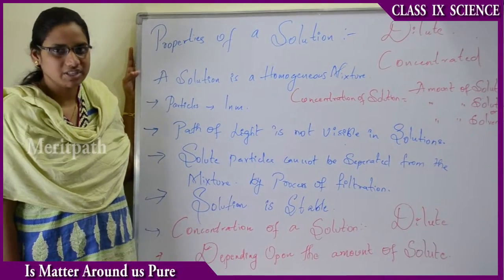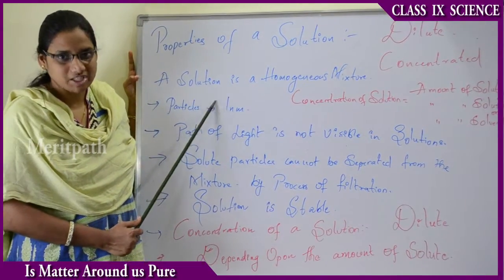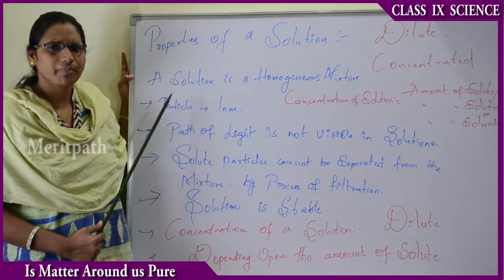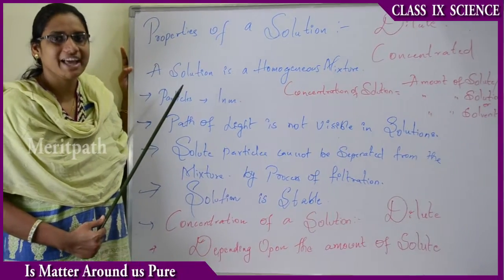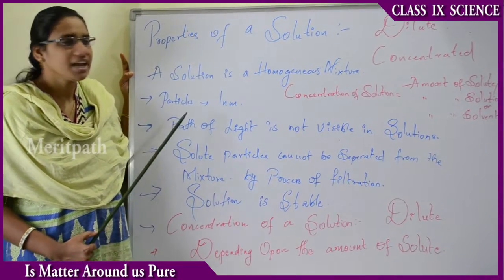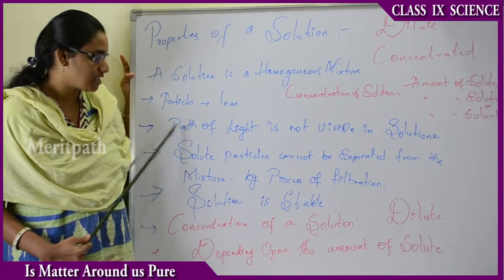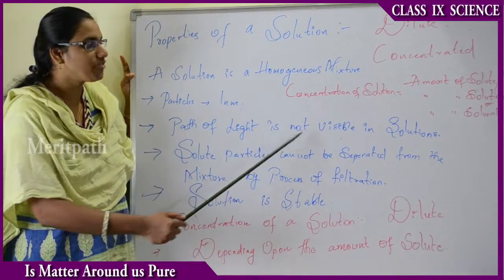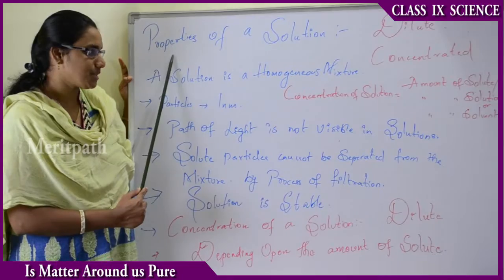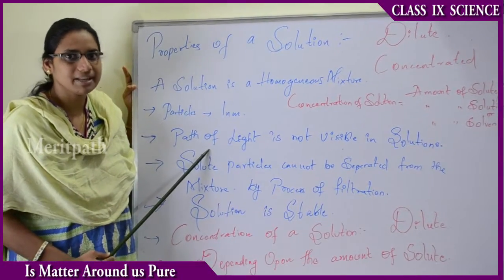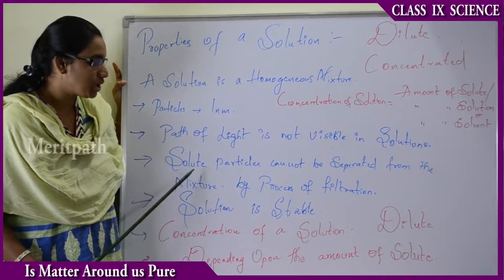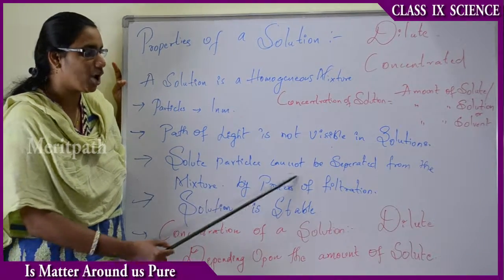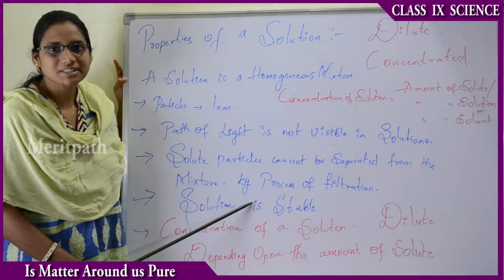Now let us see the properties of a solution. A solution is a homogeneous mixture of more than one substance. Its particles are smaller than one nanometer in size, so light travelling through the solution is not scattered and the path of light is not visible to the naked eye. Also, solute particles in a solution cannot be separated by filtration.